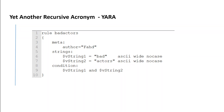YARA rules are a way of identifying malware or other files by creating rules that look for certain characteristics. On your screen, there is an example of a YARA rule. Let's understand it line by line.